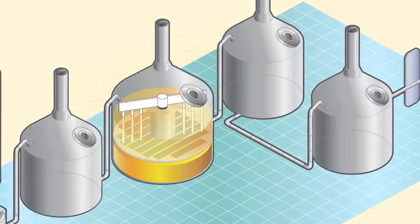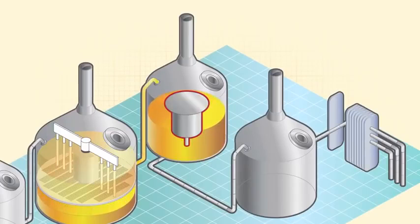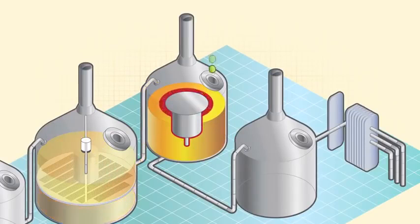This liquid is known as wort, which is then collected in a vessel called a kettle and is brought to a controlled boil before the hops are added.